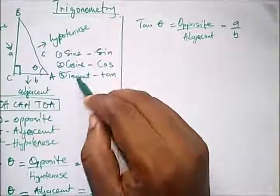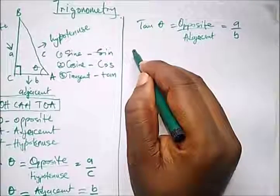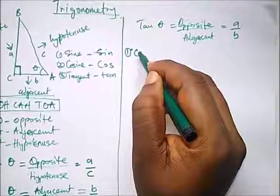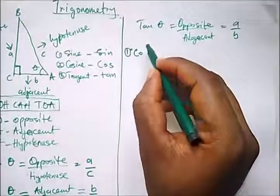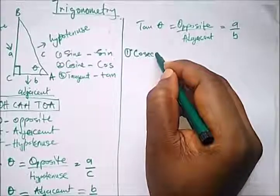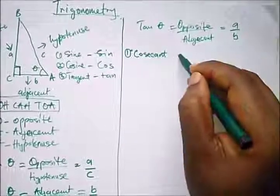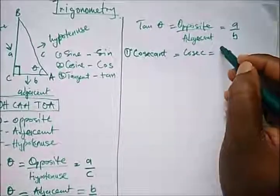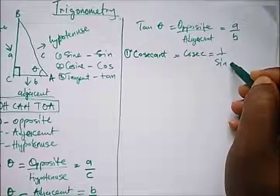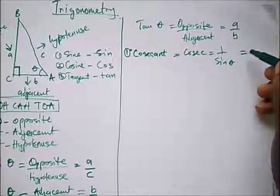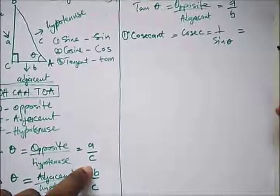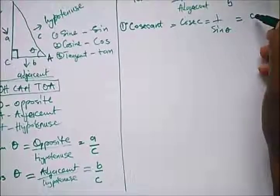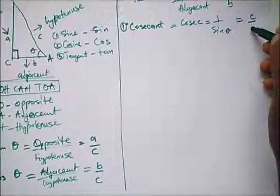Now let's look at the inverses — the reciprocals — of these trig ratios. The inverse of sine is what we know as cosecant, written as 'cosec', which is the inverse of sine theta. To find it, we just flip the fraction: C over A.